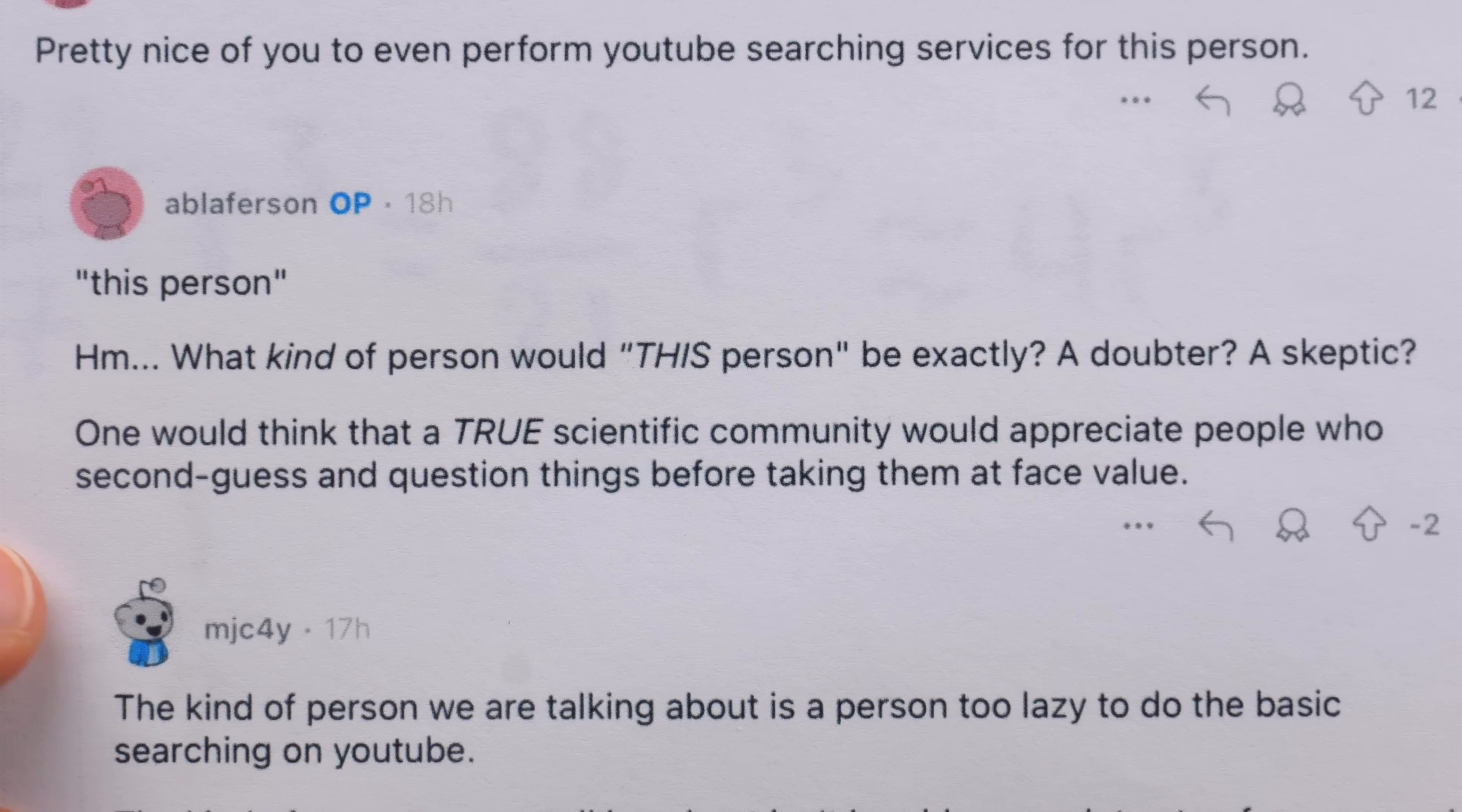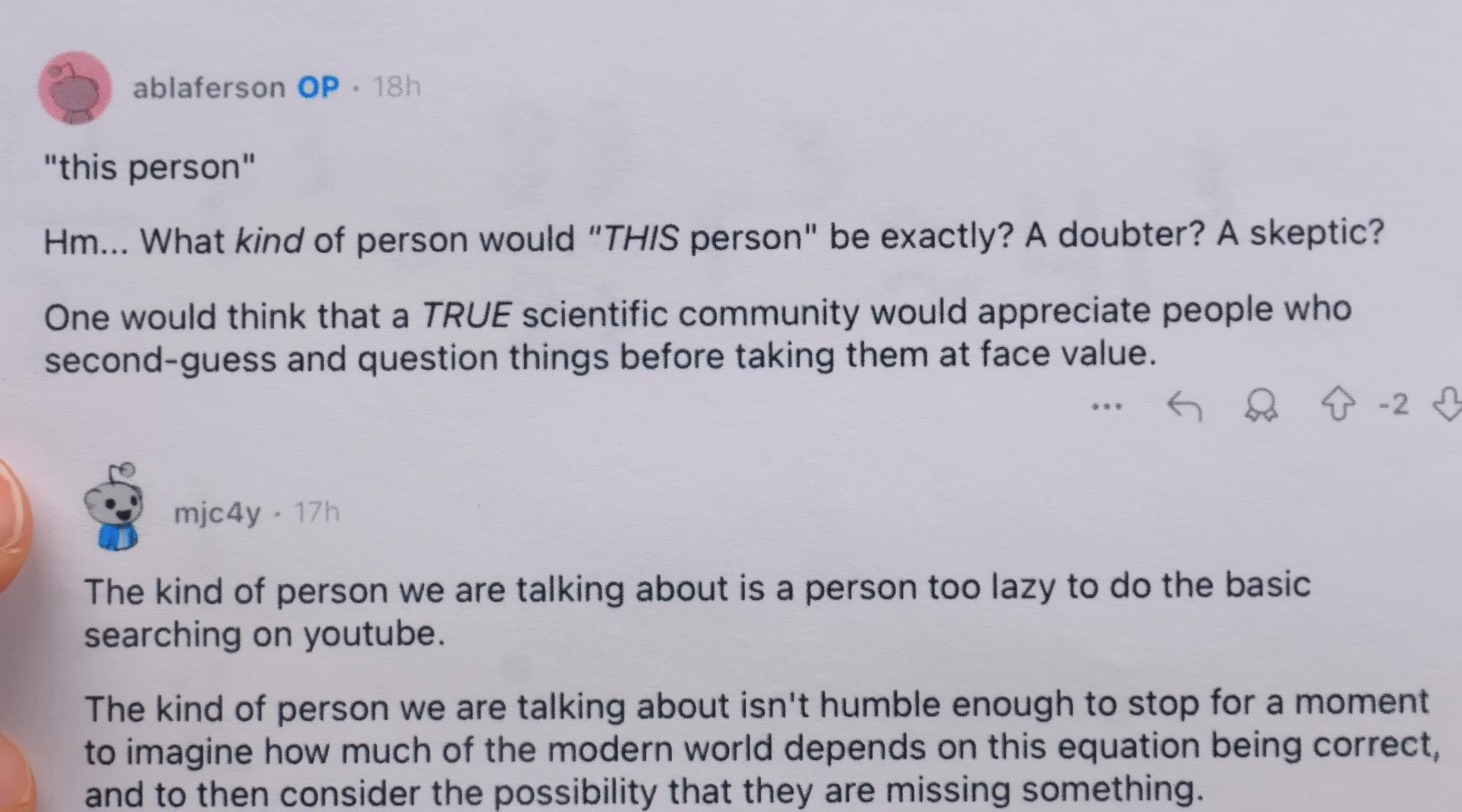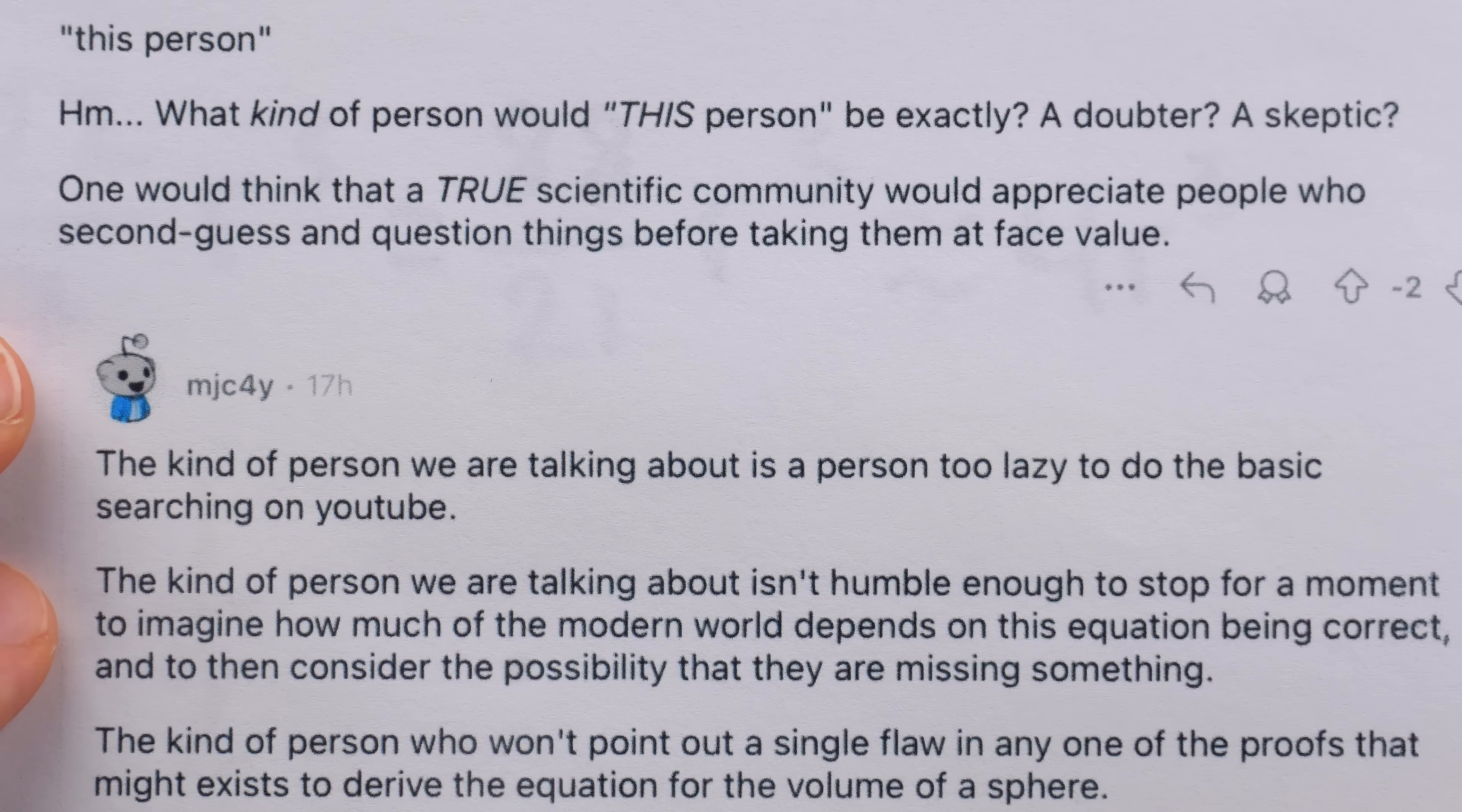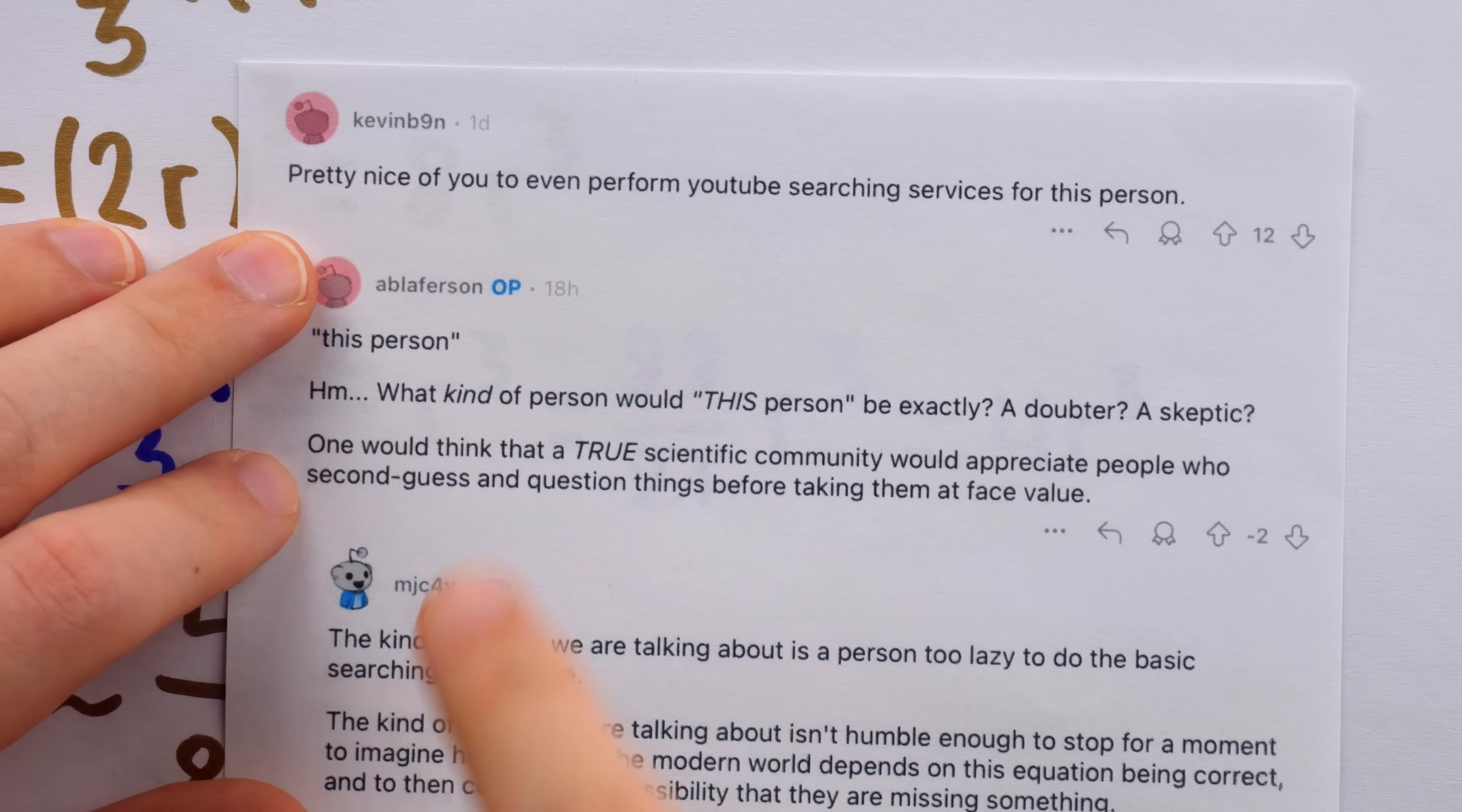Because mathematicians are viewed as a very skeptical community. We accept nothing less than absolute proof for everything. But after asking for his kind to be described, someone else absolutely goes off on him. The kind of person we're talking about is a person too lazy to do the basic searching on YouTube. The kind of person who isn't humble enough to stop for a moment to imagine how much of the modern world depends on this equation being correct, and to then consider the possibility that they are missing something. It's a good write-up. It's pretty funny.